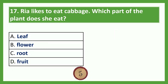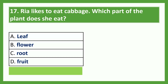Rhea likes to eat cabbage. Which part of the plant does she eat? Option A: leaf; Option B: flower; Option C: root; Option D: fruit. The answer is Option A, leaf.